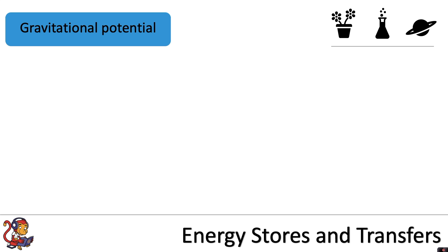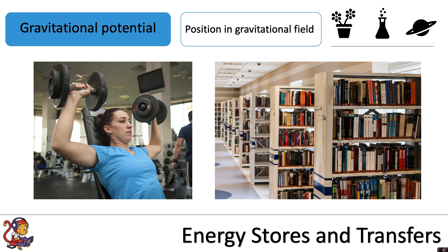Another energy store is gravitational potential. This is the energy stored due to the position of an object in its gravitational field. Basically, the higher the object is above the ground, the more energy the object will have stored in its gravitational potential energy store. For example, as this lady is lifting the weights up, she is increasing the energy stored in the gravitational potential energy store of the weights.